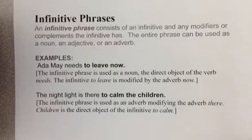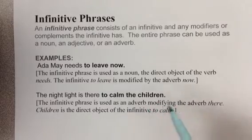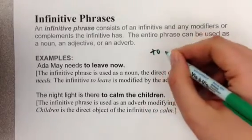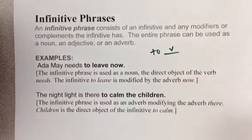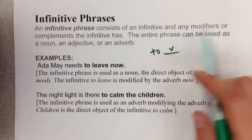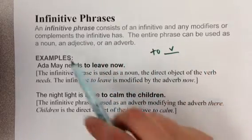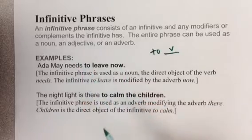So an infinitive phrase is anything that has an infinitive, which is really easy to find because you're looking for to verb. And not only is it the infinitive, it's any modifiers or complements the infinitive has. The entire phrase is used as one part of speech, and that is noun, adjective, or adverb.